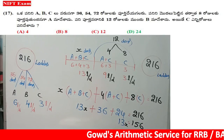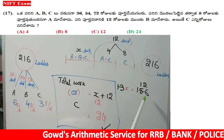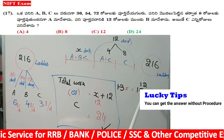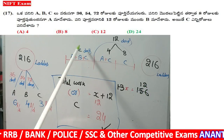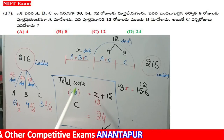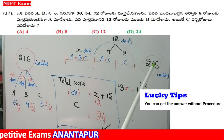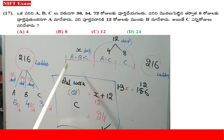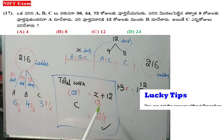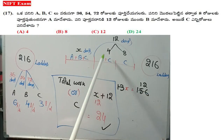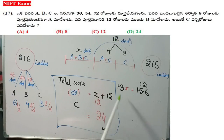Cancel. 13X is equal to 156. X is equal to 156 divided by 13. 13 once 13, 15 plus 13. So X is equal to 12. Here X is 12.